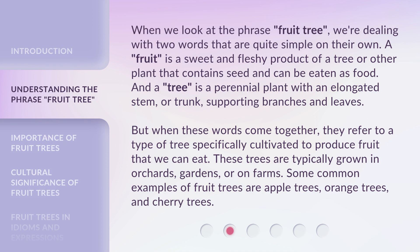When we look at the phrase 'fruit tree,' we're dealing with two words that are quite simple on their own. A fruit is a sweet and fleshy product of a tree or other plant that contains seed and can be eaten as food. And a tree is a perennial plant with an elongated stem, or trunk, supporting branches and leaves. But when these words come together, they refer to a type of tree specifically cultivated to produce fruit that we can eat. These trees are typically grown in orchards, gardens, or on farms. Some common examples of fruit trees are apple trees, orange trees, and cherry trees.